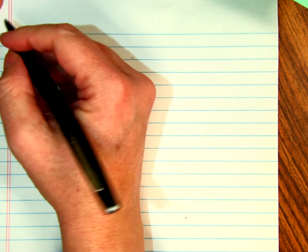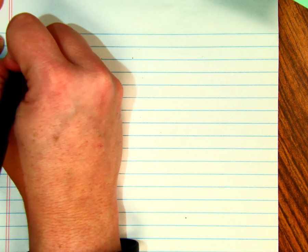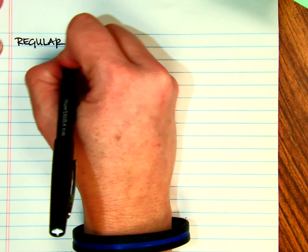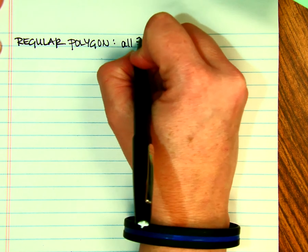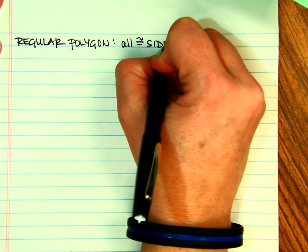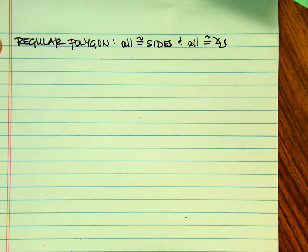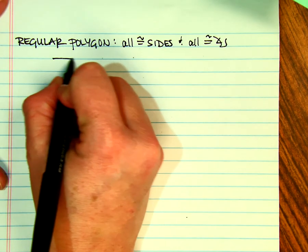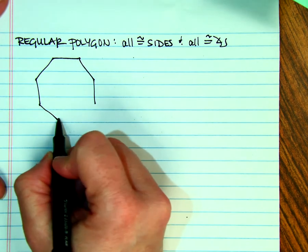If you have a figure that is equiangular and equilateral, it's called a regular polygon. And I would say most of the time this is what we are actually working on. So a regular polygon is where it is all congruent sides and all congruent angles. It's your typical figure that if you were to purchase something, a stop sign would be a regular polygon.